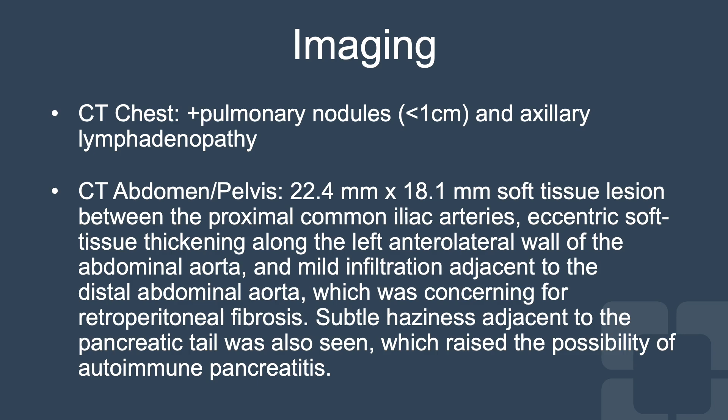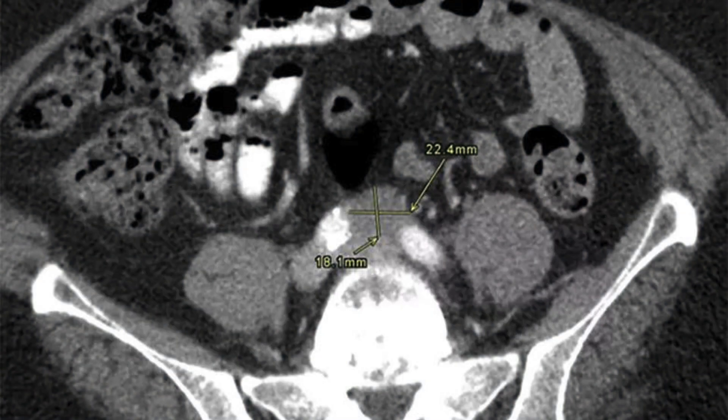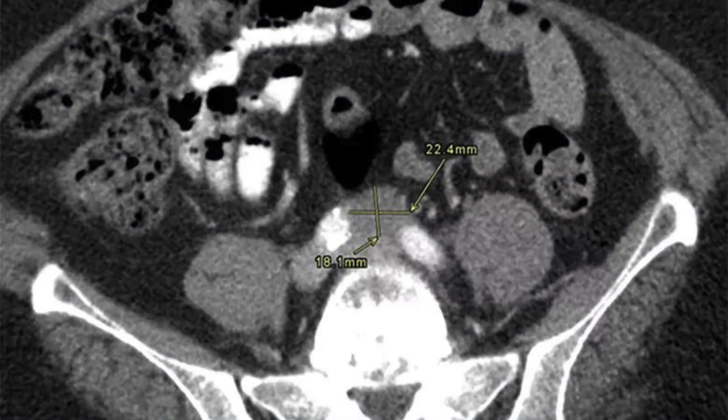Subtle haziness adjacent to the pancreatic tail was also seen, which raised the possibility of autoimmune pancreatitis. Our patient was subsequently diagnosed with IgG4-related disease and was started on prednisone 40 mg per day, which was tapered over time, along with rituximab infusions.